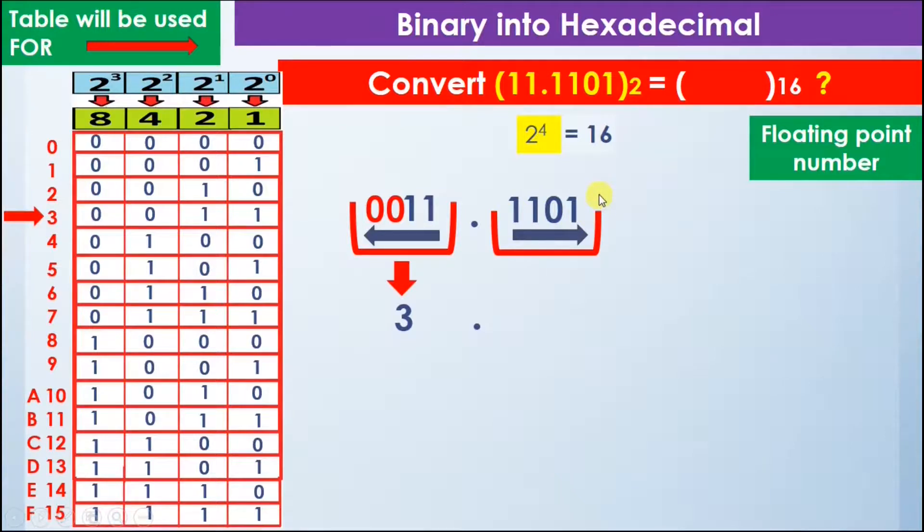Where is the binary value 1101 in the table? Now we can see that the value is here: 1101, and it is equal to D, so we write D here.